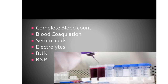ECG changes observed with hypomagnesemia include tall T-waves and depressed ST segments. High magnesium — hypermagnesemia — may cause muscle weakness, hypotension, and bradycardia. ECG changes with hypermagnesemia include prolonged PR interval and widened QRS complex.